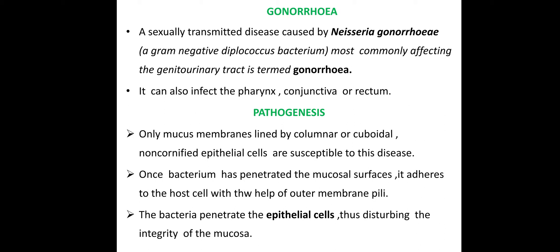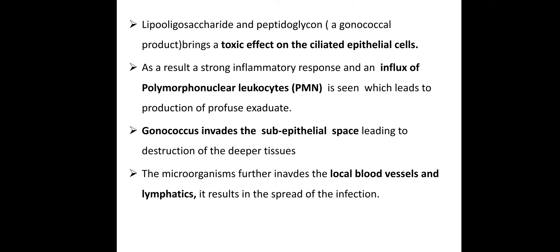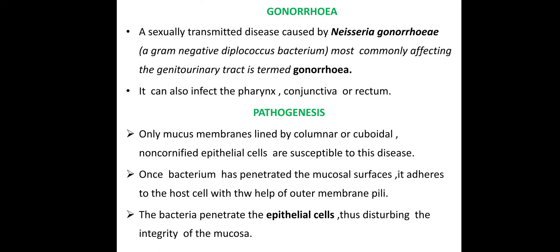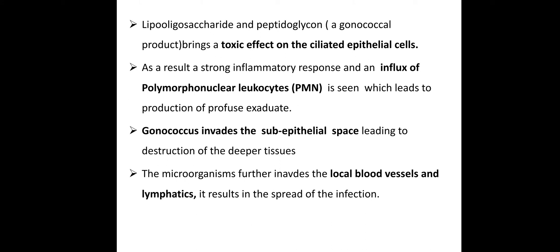For example, in our body we have non-cornified epithelial cells. The epithelial cells are attached to the mucosal layer. The bacteria penetrate the epithelial cells, disrupting the integrity of the mucosal layer. The lipo-oligosaccharide and peptidoglycan of the outer membrane bring a toxic effect on ciliated epithelial cells. The outer membrane also contains lipoprotein, which has a toxic effect on epithelial cells.